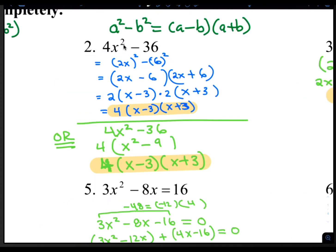Let's look at number 2. First, I would factor out a 4, because 4 can go into 36 also. So let's factor out a 4 as the greatest common factor, leaving us with x squared minus 9. Now, x squared minus 9 — those are both perfect squares, so they follow the difference of squares formula, which is A minus B times A plus B. A is x and B is 3, because 3 squared is 9. So that's 4 times x minus 3 times x plus 3.